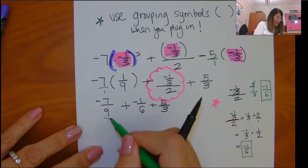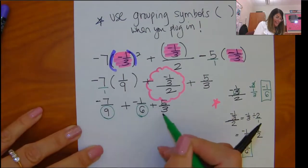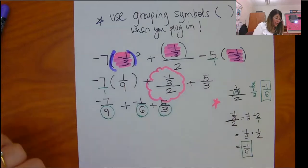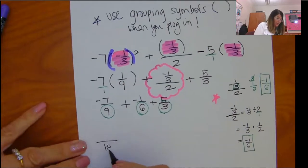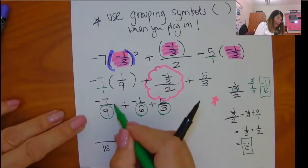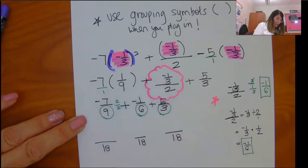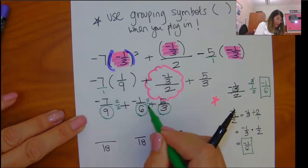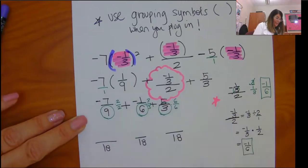Now I need to get a common denominator. I've got 9ths, 6ths, and 3rds. So I'm going to turn each of those into 18ths. So my common denominator is going to be 18. I'm going to multiply by 2 over 2, by 3 over 3, and by 6 over 6.